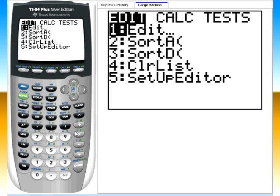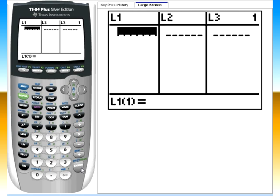I'm going under the Edit menu, so I want to click either number one or just press enter since one is highlighted, and this is basically a spreadsheet where you can enter data.